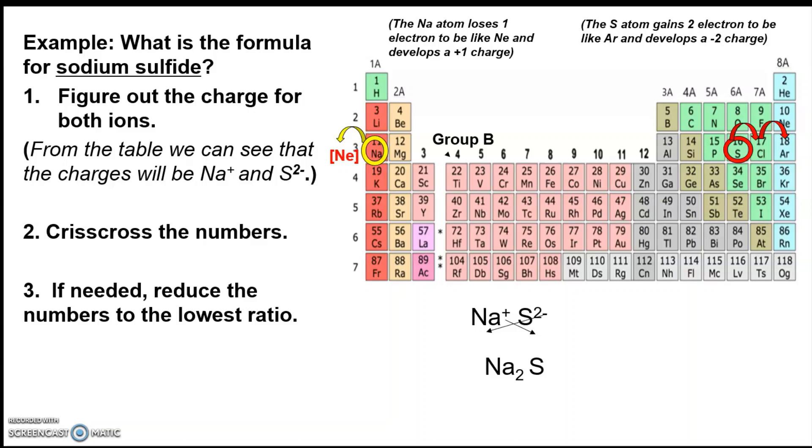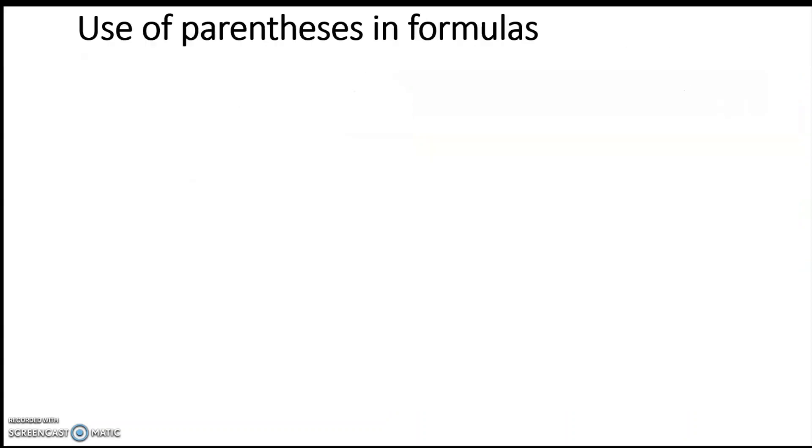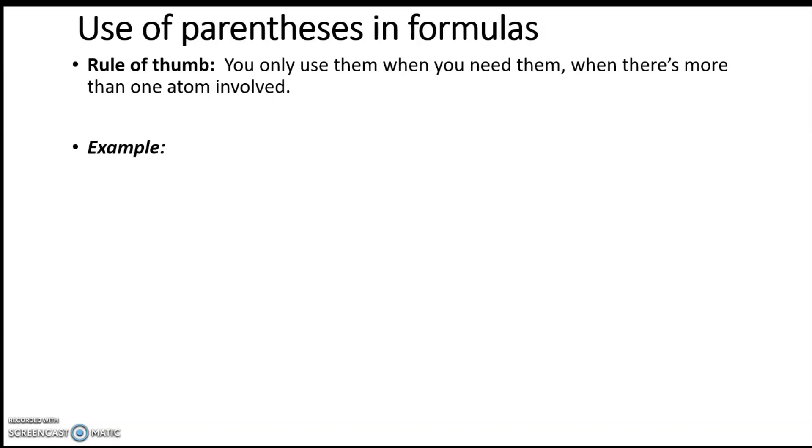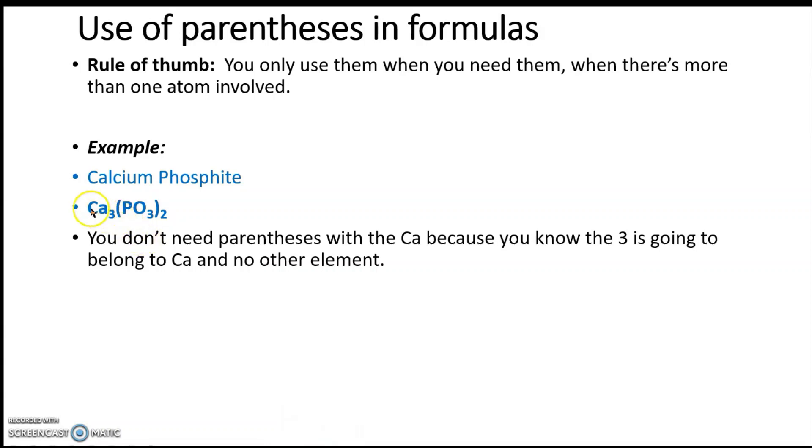Now, the only other thing that sometimes people have questions about is the use of parentheses. Sometimes people get very stressed about parentheses. And I'm going to show really quickly before we even tackle any of these with a periodic table. It's actually very simple. The rule of thumb is that you only use them when you need them, when there's more than one atom involved. And so the example here is a perfect example. It's kind of a scary looking formula, but it's a perfect example. We're not going to go through all the crisscross and everything. I'm just going to show you what the formula is. That's calcium phosphate. Phosphate, and you can see pretty easily that you don't really need the parentheses here with the calcium.